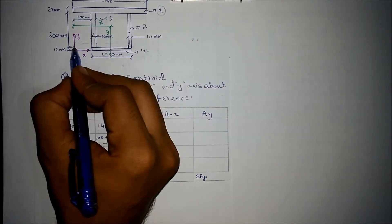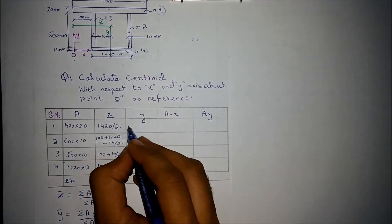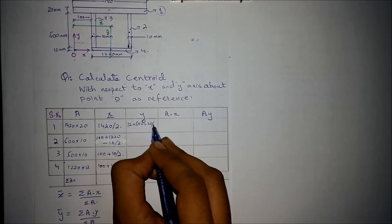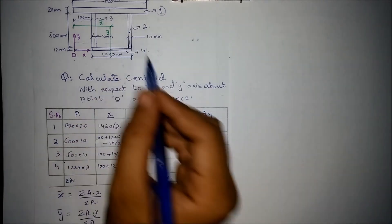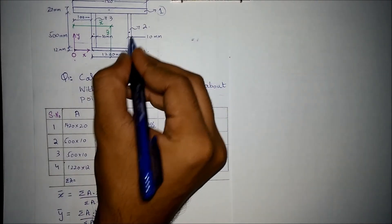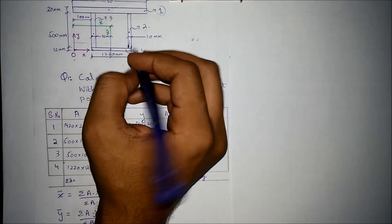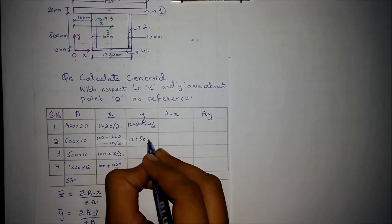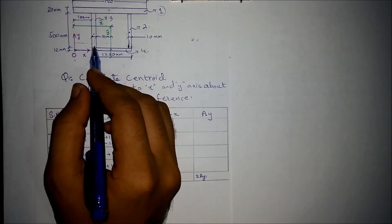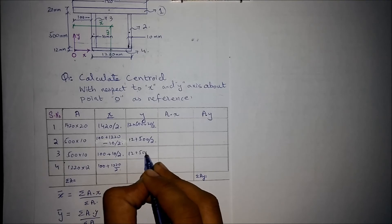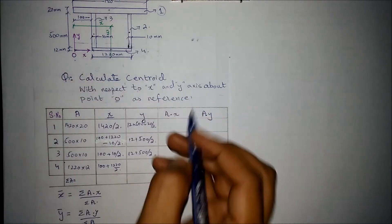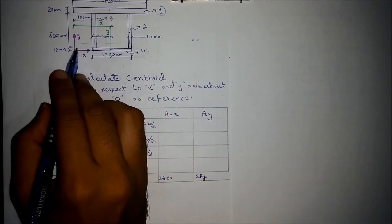Similarly, working out the distance or lever arm for each shape along the y axis: for shape number 1, it is 12 mm plus 500 mm plus 20 over 2. For shape number 2, it will be 12 mm plus half of 500 mm as the lever arm along the y axis. For the same shape, 12 plus 500. For shape number 4, the distance will be half of 12 mm from the x axis along the y axis.